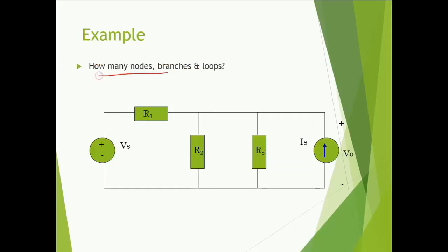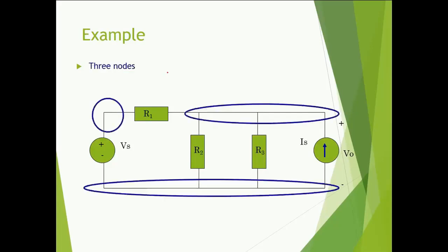Let us take this example — how many nodes, branches, and loops are there in this circuit diagram? As per the definition, where two elements are connecting together is known as a node. So this is node number one, this is node number two. We have considered this whole section as a single node because in this wire there is no element. Similarly, the third node is the lower one — we do not have any element in between these wires.